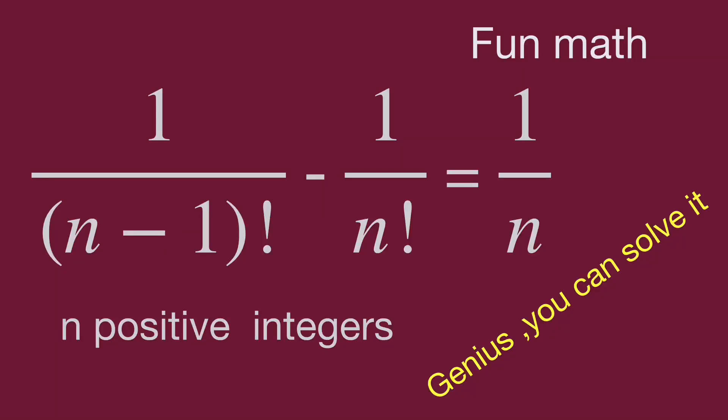Hello, you are watching Bala Hippo Maths Genius Readers. This is from maths questions about factorial equations: 1 over (n minus 1) factorial minus 1 over n factorial equals 1 over n, where n is a positive integer. Find the value of n.